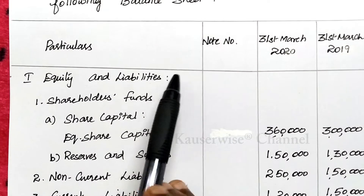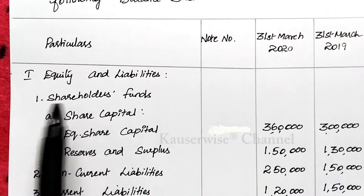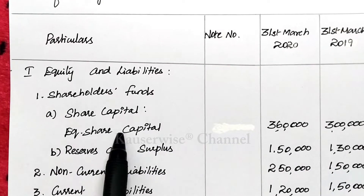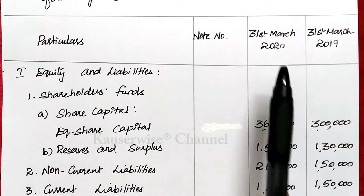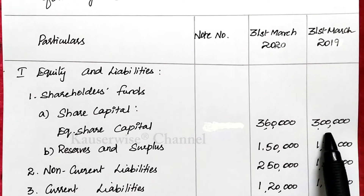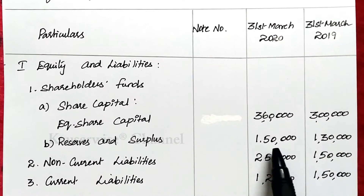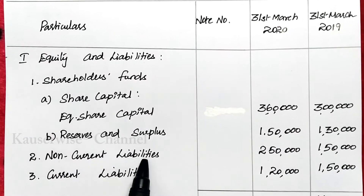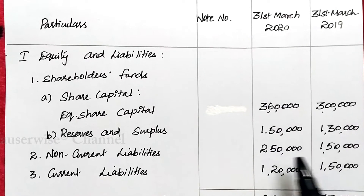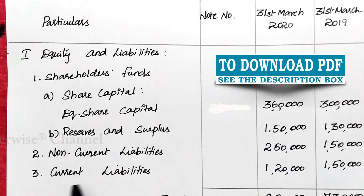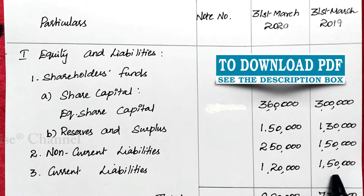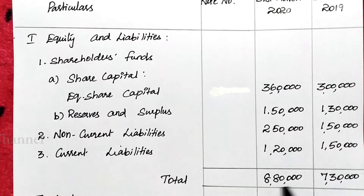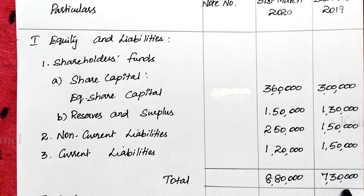Under equity and liabilities, the first component is shareholders fund. Under shareholders fund, equity share capital is 3,60,000 in the year 2020 and 3,00,000 in the previous year 2019. Reserves and surplus: current year 1,50,000 and previous year 1,30,000. Non-current liabilities: current year 2,50,000, previous year 1,50,000. Current liabilities: current year 1,20,000, previous year 1,50,000. Total liabilities: current year 8,80,000 and previous year 7,30,000.